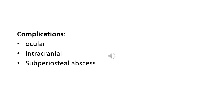Orbital cellulitis is a life-threatening condition. Complications include: ocular complications such as exposure keratopathy, raised intraocular pressure, occlusion of the central retinal artery or vein, endophthalmitis, and optic neuropathy. Intracranial complications — rare but serious — include meningitis, brain abscess, and cavernous sinus thrombosis. Cavernous sinus thrombosis should be suspected when there is bilateral involvement, rapidly progressive proptosis, congestion of facial, conjunctival and retinal veins, severe headache, nausea, and vomiting. Subperiosteal abscess is most frequently located along the medial orbital wall.